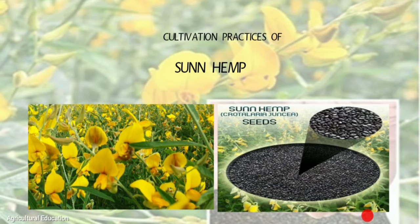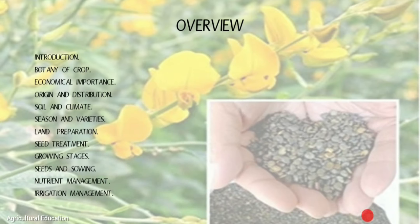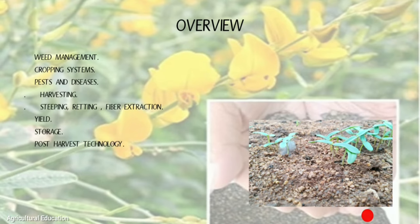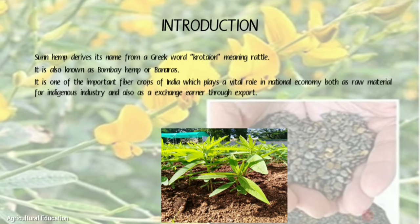Cultivation practices of sunhemp: overview, introduction, botany of the crop, economical importance, origin and distribution, soil and climate, seasons and varieties, land preparation, seed treatment, growing stages, seeds and sowing, nutrient management, irrigation management, weed management, cropping systems, pest and diseases, harvesting, yield, storage, steeping, retting, fiber extraction, and post harvest technology.